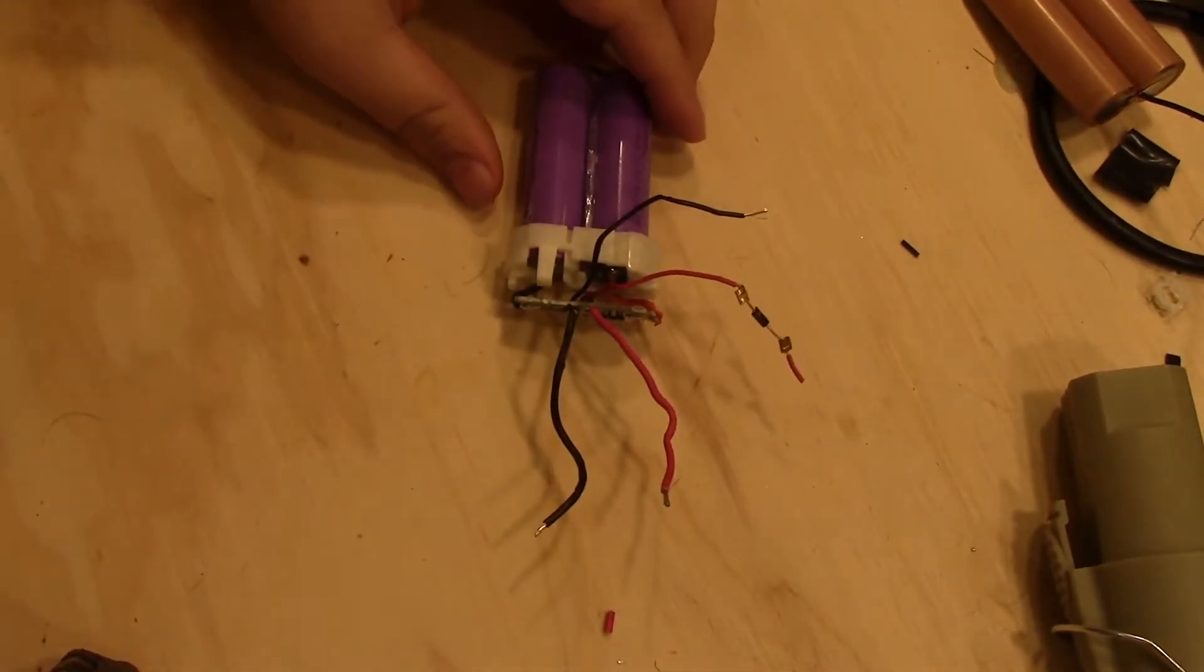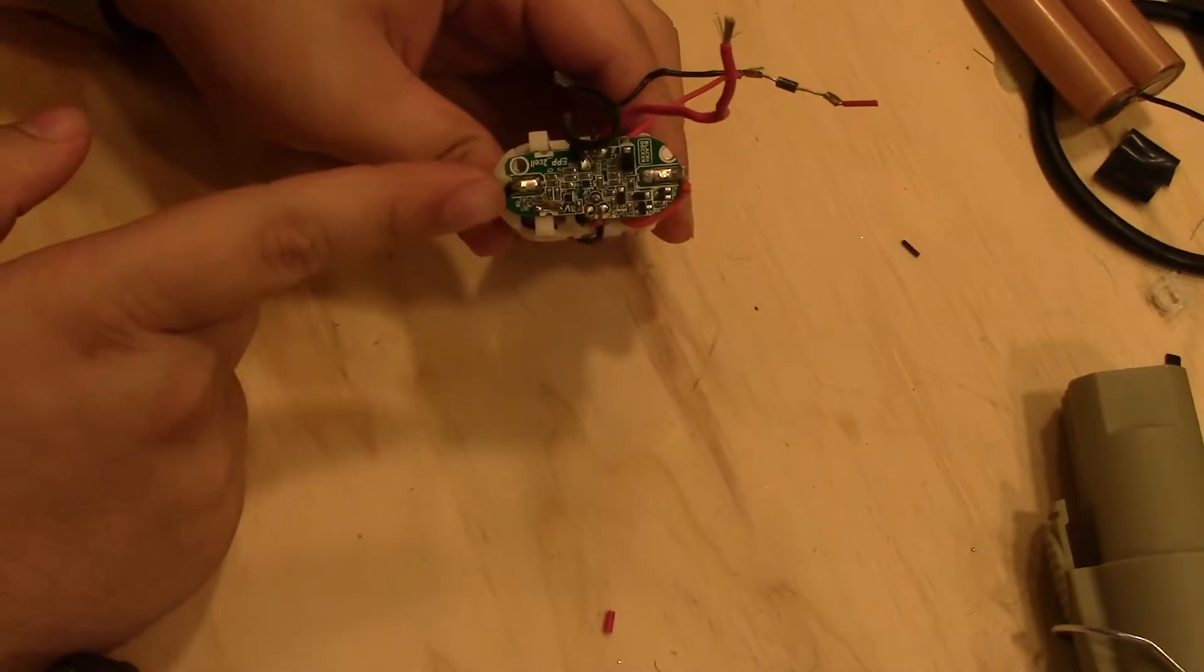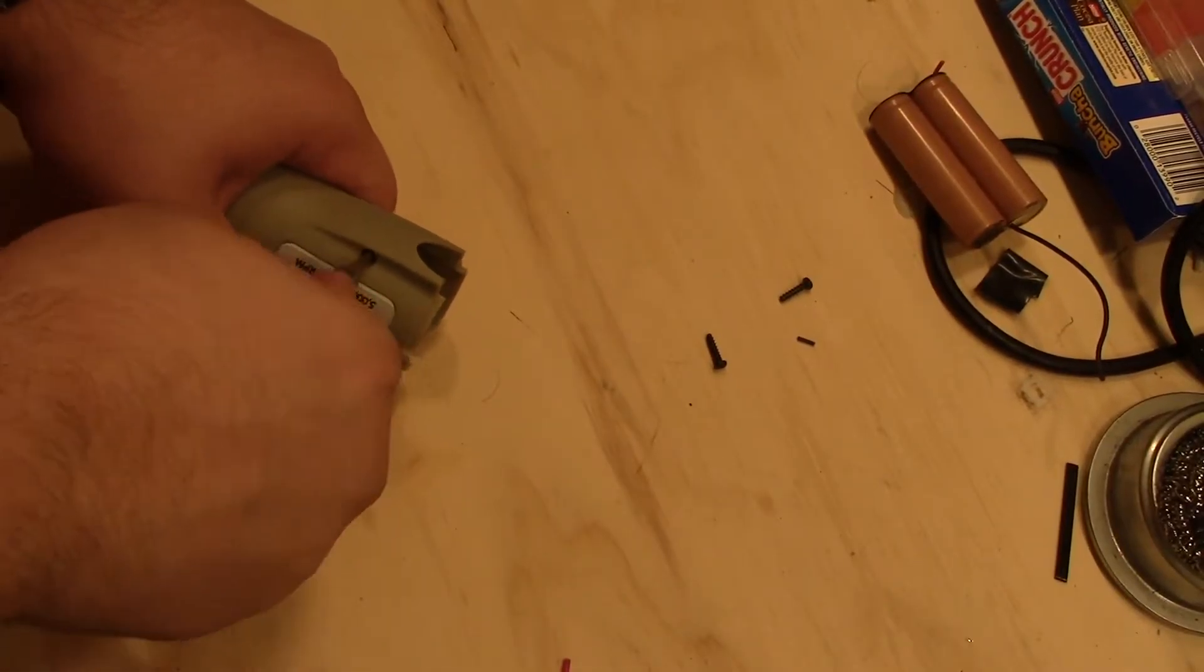These are the two lithium ion cells I'll be using. As you can see, the charge controller sits on top and there are four sets of wires - two are the input and two are the output.